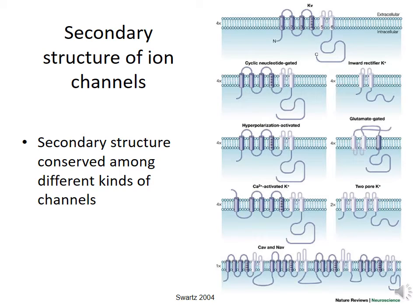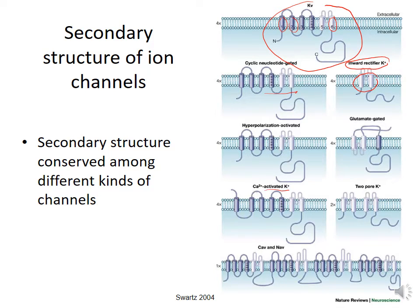If you look at the secondary structures of these ion channels, you can find that they have similarities within a particular subfamily. A voltage-gated potassium channel, shown at the top of this figure, has these transmembrane domains. Some other types of ion channels such as cyclic-nucleotide-gated channels look somewhat similar. Inward-rectifying potassium channels, on the other hand, have a much simpler structure, and some other classes of potassium channels also have very characteristic secondary structures.